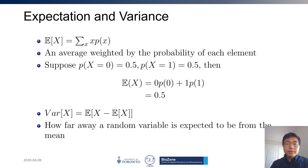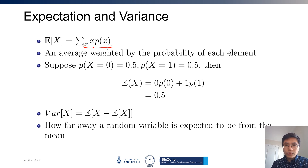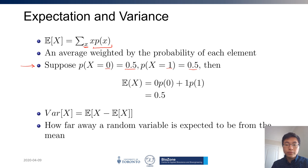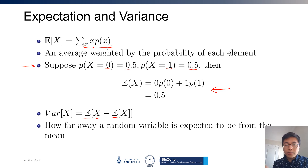A brief word on expectation and variance. Expectation is simply a weighted sum where the weights are the probabilities of that value occurring. I'm summing over all the possible values of x. For example, in a coin toss, suppose zero is heads and one is tails. If it's a fair coin, the likelihood of each heads or tails is 0.5. The variance is all defined by the expectation — it's the expected difference between your values and the expectation of those values, i.e., how far away your values are from the mean.